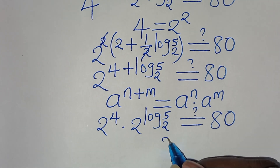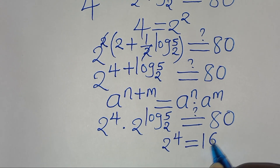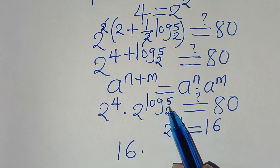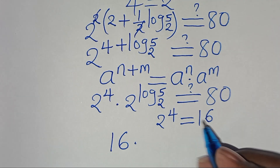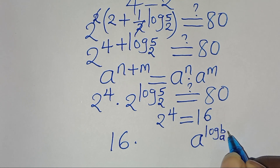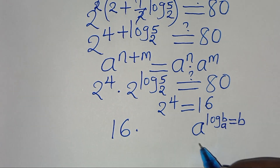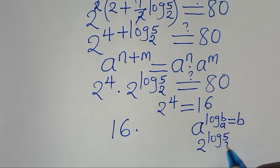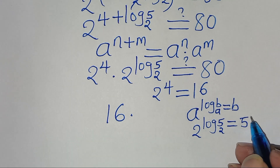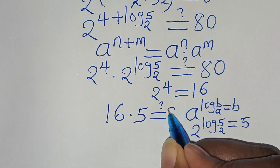We have that 2 to the power of 4 is the same as 16. Multiplied by 2 to the power of log₂5 — and this is in the form a to the power of log_a(b), which equals b — so 2 to the power of log₂5 equals 5. Substituting, we have 16 times 5, which should give us 80.